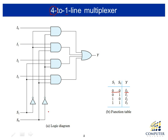When the selection signal is zero-one, then input one is directly connected to the output. If selection inputs are one-zero, then input two is connected. If selection inputs are one-one, then input three is directly connected to the output.